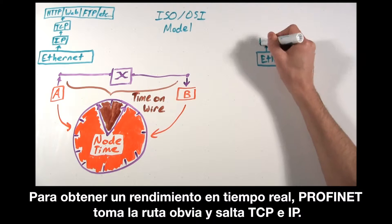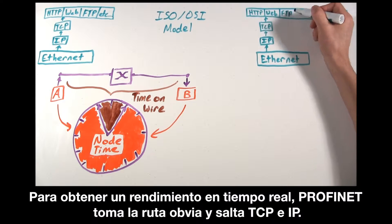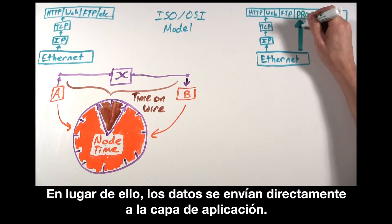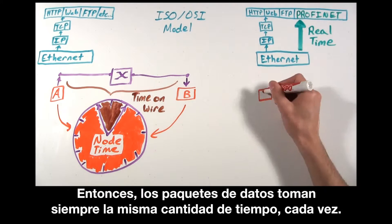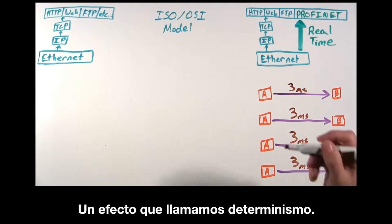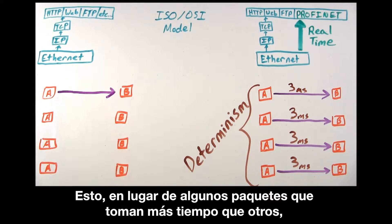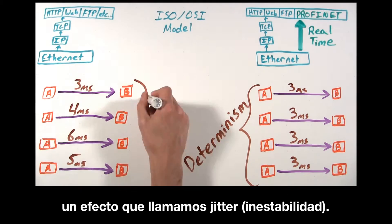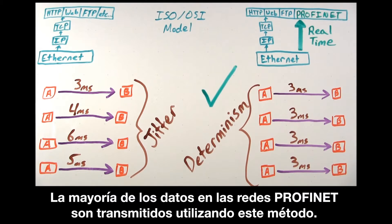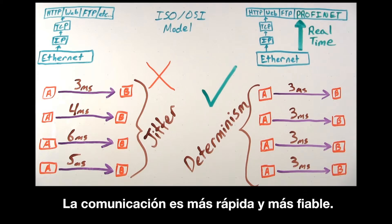To get real-time performance, PROFINET goes the obvious route and skips TCP and IP. Instead, data is directly sent to the application layer. So data packets take the same amount of time every time — an effect we call determinism — instead of some packets taking longer than others, an effect we call jitter. Most data in PROFINET networks is transmitted using this method. Communication is quicker and more reliable.